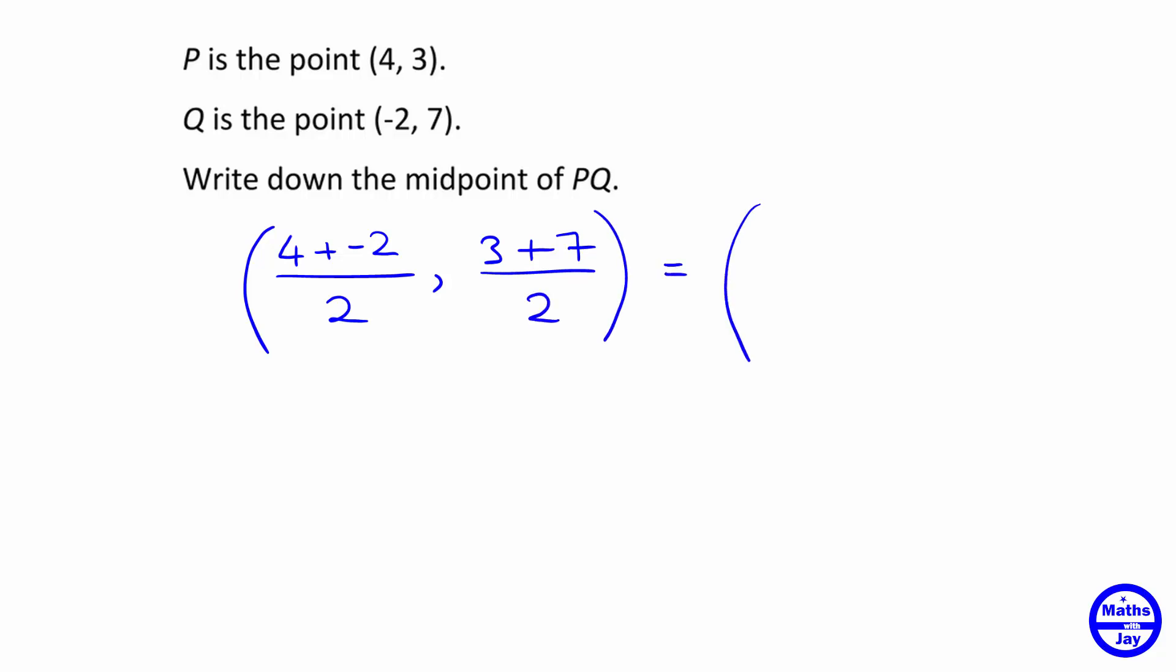So 4 plus negative 2 is 4 minus 2, that's 2 over 2. 3 plus 7 is 10. So the midpoint is going to be at the point with coordinates (1, 5).